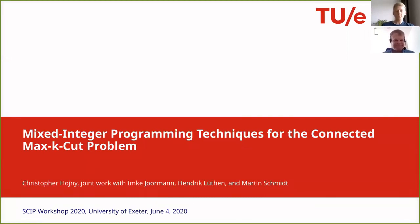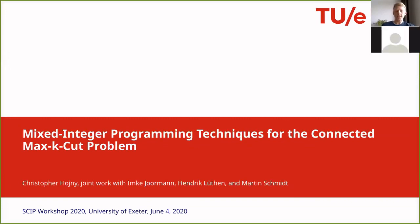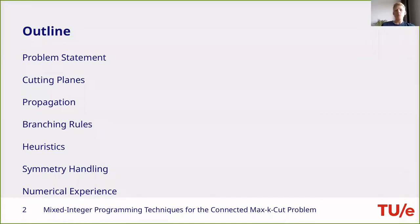Thank you, Marc, for the kind introduction. Today I want to talk about an empirical study of the Max-K-Cut problem where we additionally want our graph partition induced by the cuts to be connected. This work is joint work with Imke Jormann, Hendrik Lüten, and Martin Schmidt. I'll give a short introduction on why this problem is interesting, then explain the different techniques implemented for SCIP, including cutting planes, propagation rules, and branching rules.